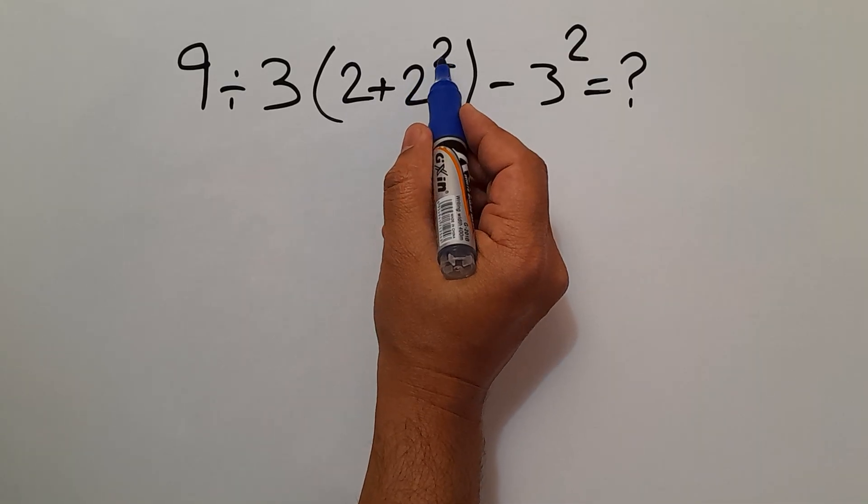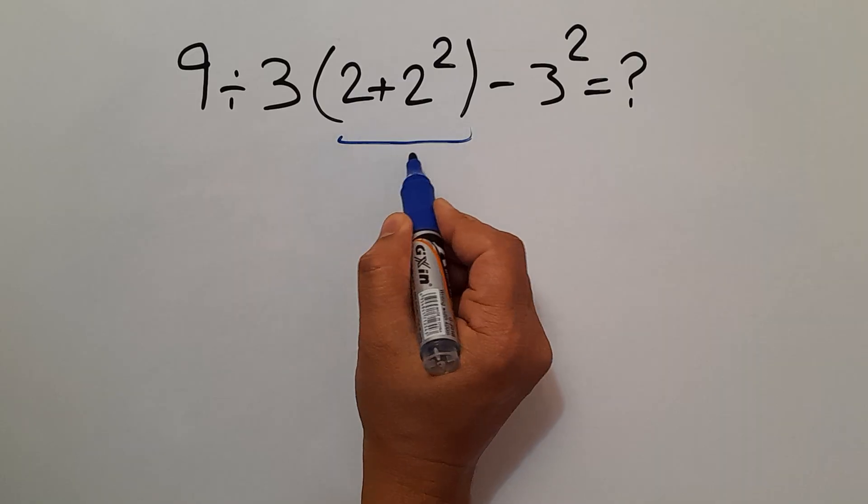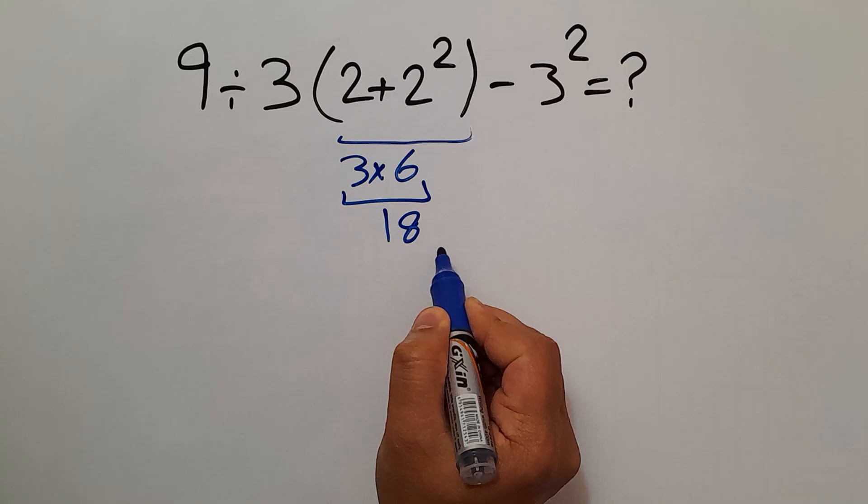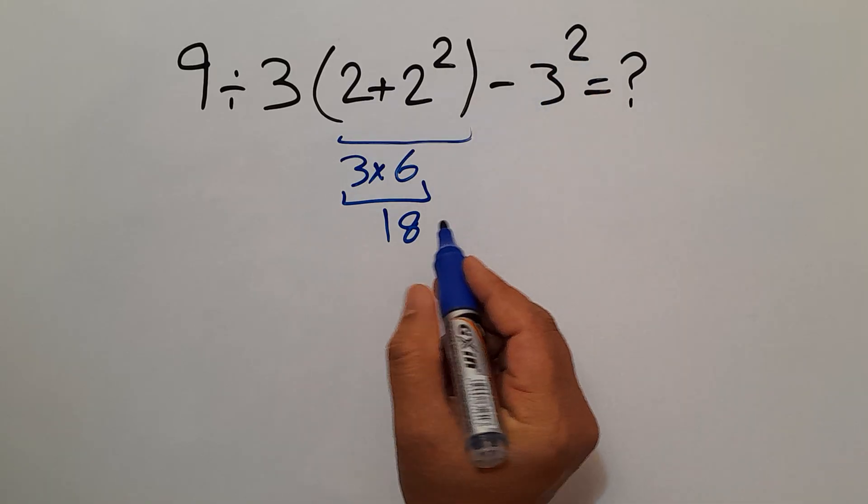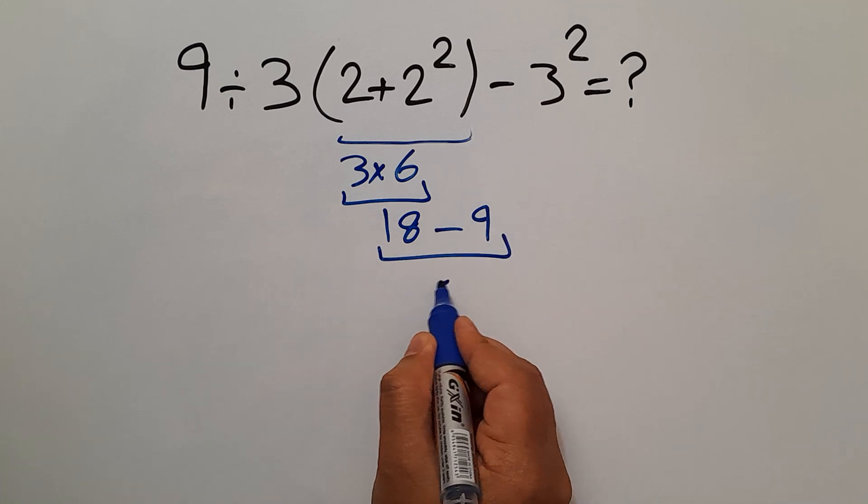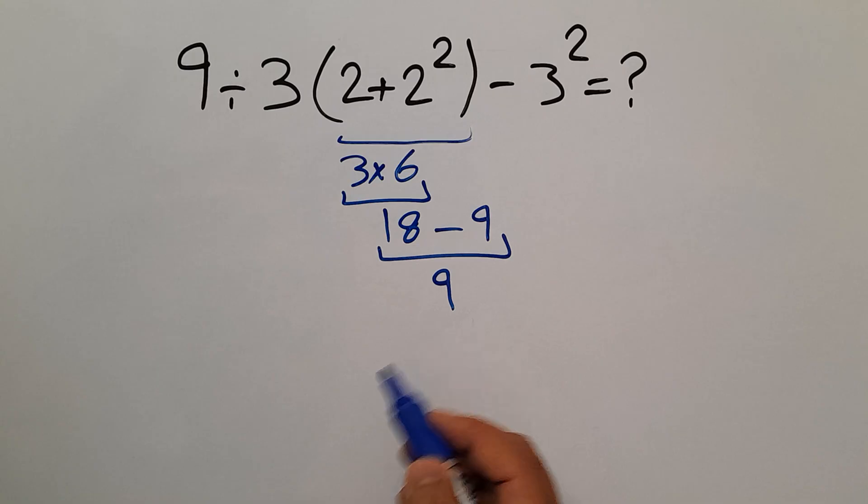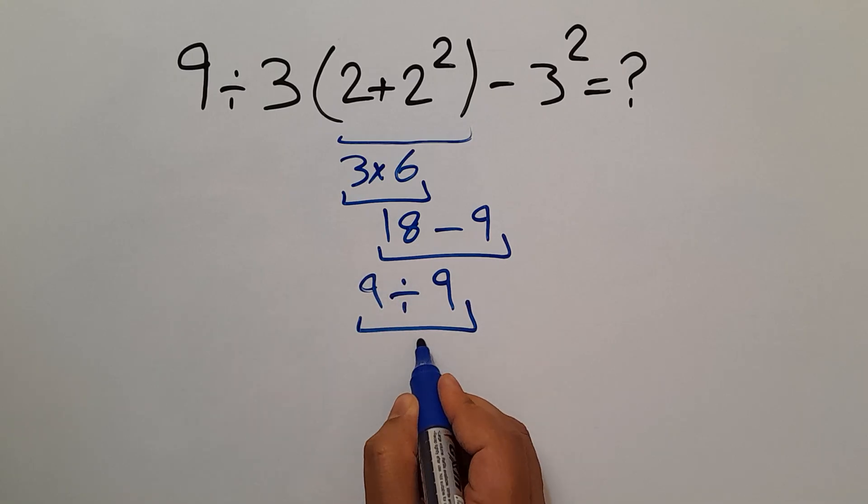2 squared gives us 4. 2 plus 4 equals 6. So 3 times 6 equals 18, and 18 minus 3 squared. 3 squared equals 9, so 18 minus 9 which equals 9. And here we have 9 divided by this number, so 9 divided by 9 equals just 1. But this answer is not correct.